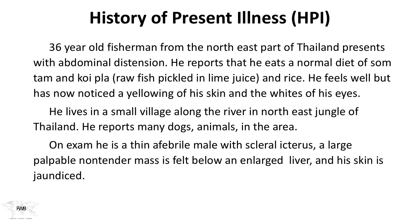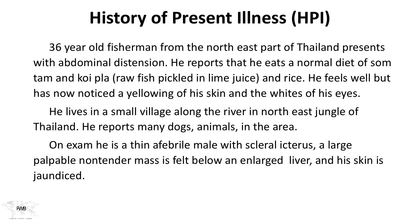A 36-year-old fisherman from the northeast part of Thailand presents with abdominal distention. He reports that he eats a normal diet of som tam and koi pla — raw fish pickled in lime juice and rice. He feels well but has now noticed a yellowing of his skin and the whites of his eyes. He lives in a small village along the river in the northeast jungle of Thailand and reports many dogs and animals in the area. On exam, he is a thin, afebrile male with scleral icterus — that's a yellowing of the whites of the eyes. A large, palpable, non-tender mass is felt below an enlarged liver and his skin is jaundiced.